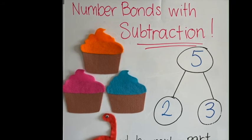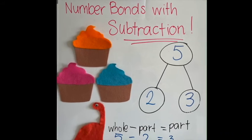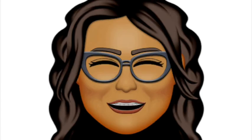Now let's write our subtraction sentence: five take away two equals three. Now that we know this, we can find all the missing parts to our number bonds. See ya!